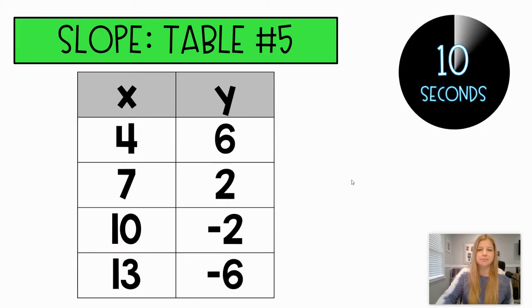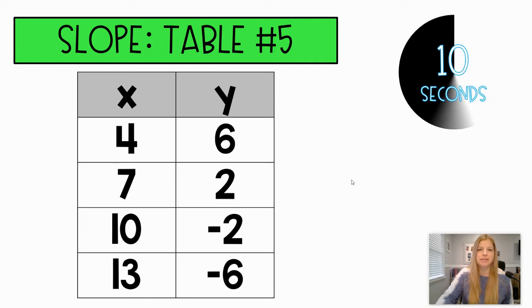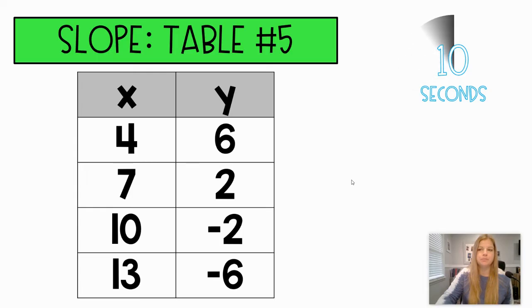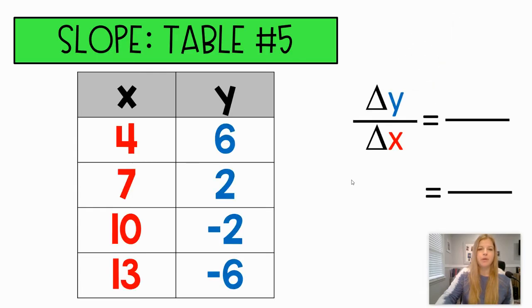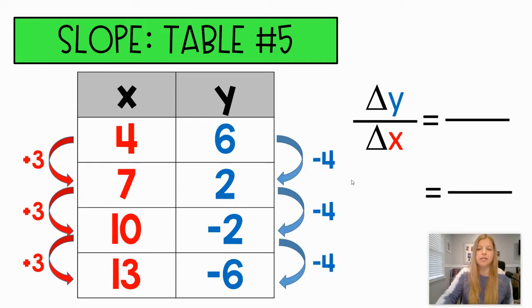Last table, guys. This is our last table to calculate our slope. Okay, hopefully we saw the x values increased by threes, the y values decreased by fours. So it's negative four over three. Awesome.